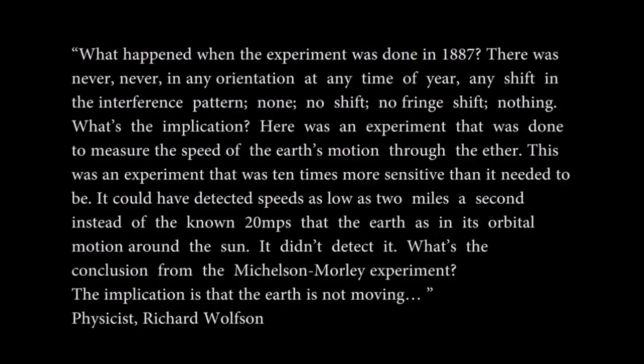What happened when the experiment was done in 1887? There was never, never in any orientation at any time of the year, any shift in the interference pattern. None. No shift. No fringe shift. Nothing. What's the implication? Here was an experiment that was done to measure the speed of the earth's motion through the ether. This was an experiment that was 10 times more sensitive than it needed to be. It could have detected speeds as low as 2 miles per second, instead of the known 20 miles per second that the earth moves on its orbital motion around the sun. It didn't detect it. What's the conclusion from the Michelson-Morley experiment? The implication is that the earth is not moving. Richard Wolfson.